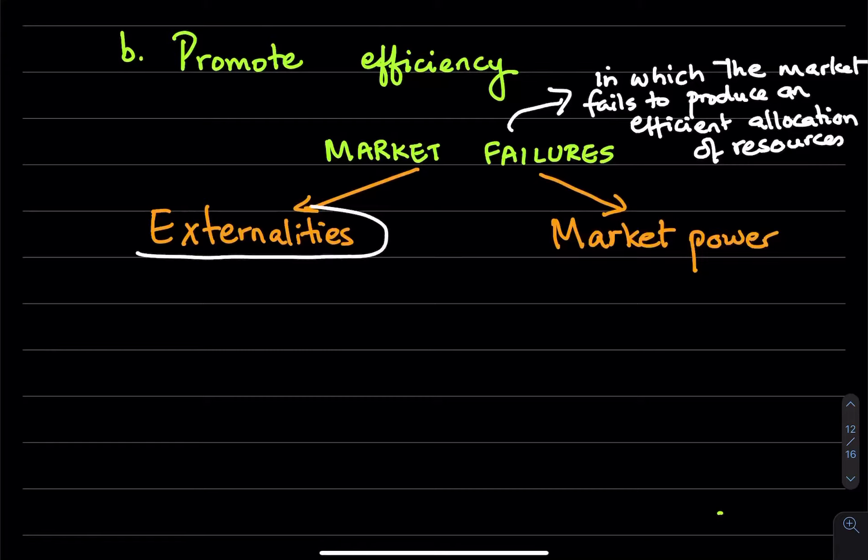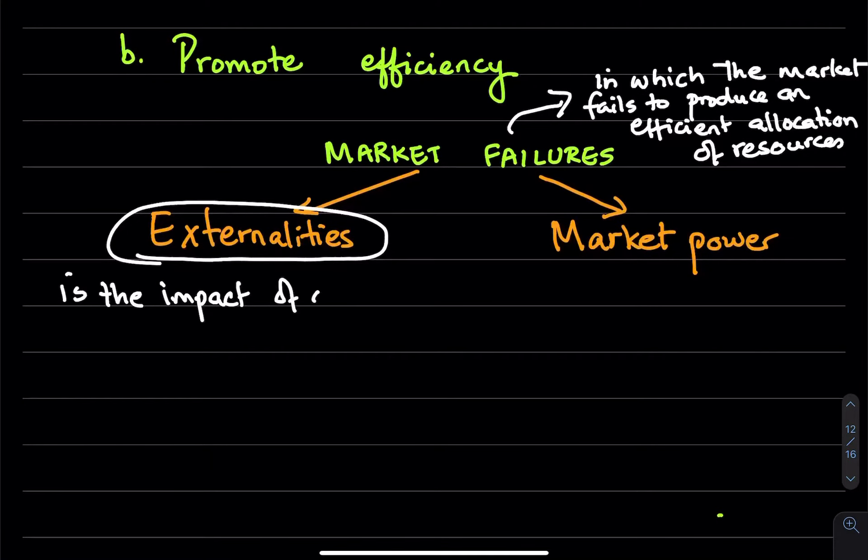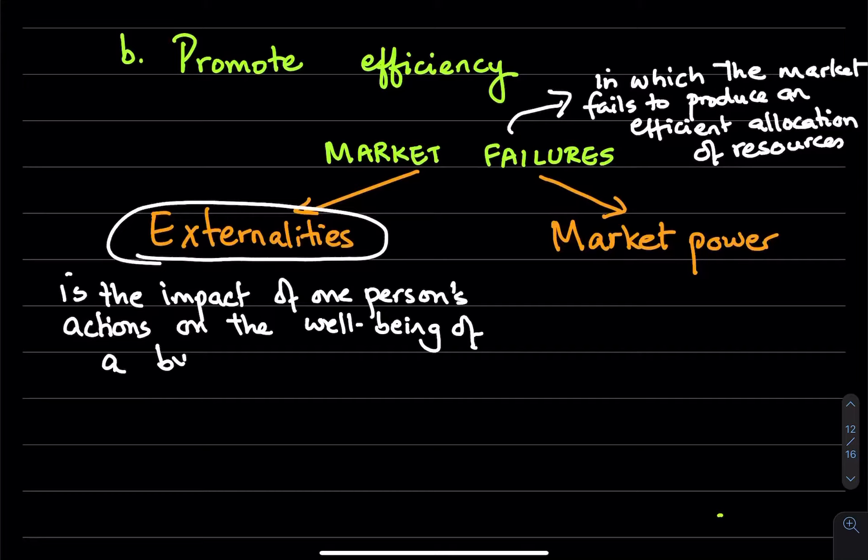So let's talk about the first type of market failure or the cause of market failure, which is an externality. So an externality is the impact of one person's actions on the well-being of a bystander. Okay, so the bystander could be a person who's not really taking any action, but is just there and is being affected.